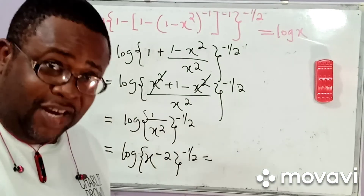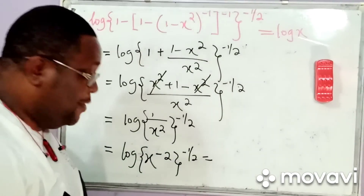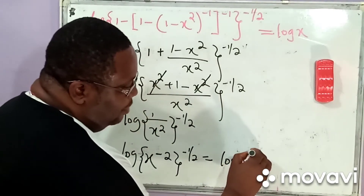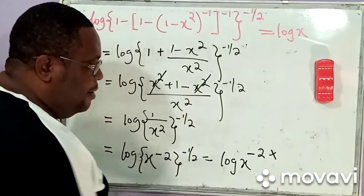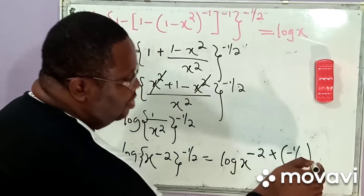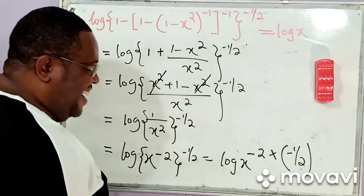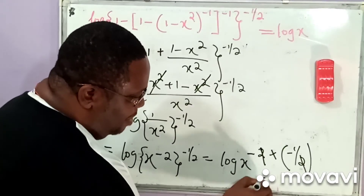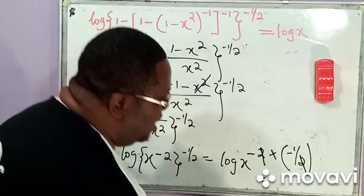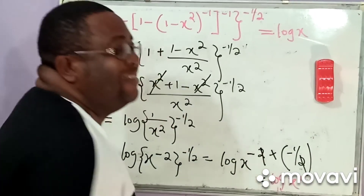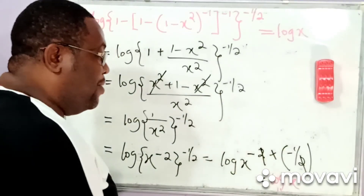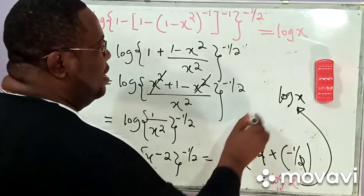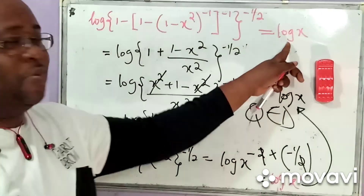And this becomes equal to — from the third law of indices — this negative 2 can multiply negative half. So what do we then have? This simply becomes the logarithm of x. Negative 2 multiplied by negative 1 over 2: the 2 cancels and negative times negative changes to plus. So my final answer simply becomes log x to the power 1, and log x to the power 1 will simply give me log x — QED, which is what we were asked to show.